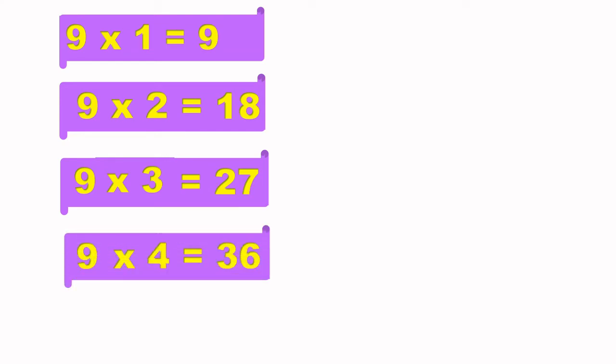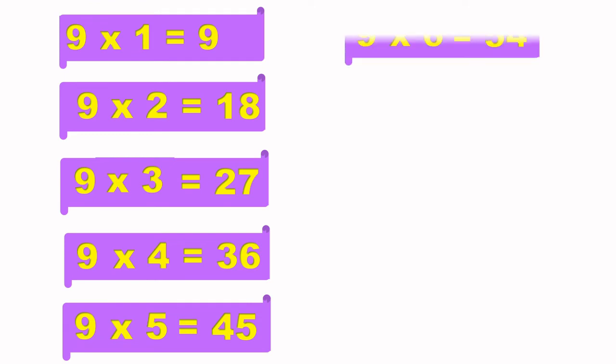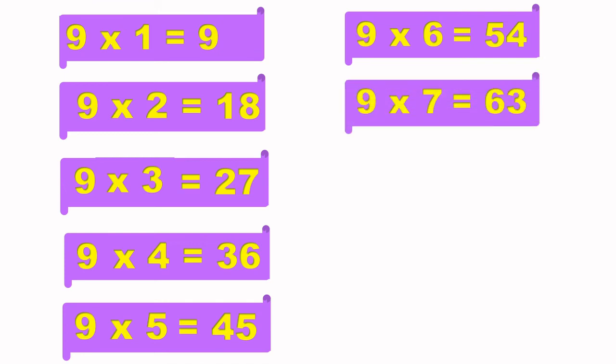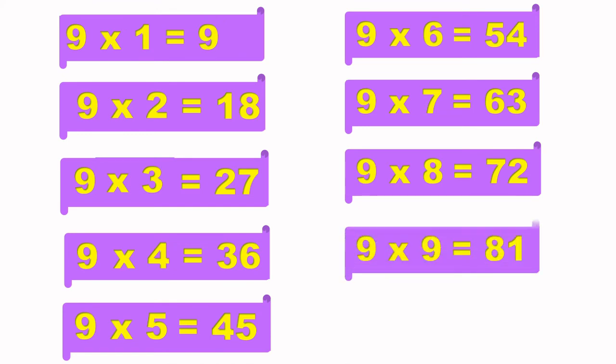9 fours are 36. 9 fives are 45. 9 sixes are 54. 9 sixes are 54. 9 sevens are 63. 9 sevens are 63. 9 eights are 72. 9 eights are 72. 9 nines are 81. 9 nines are 81. 9 tens are 90. 9 tens are 90.